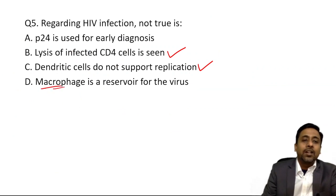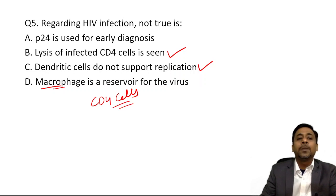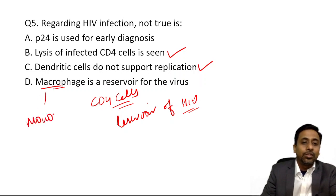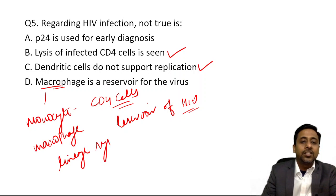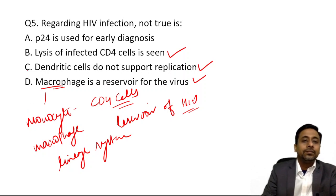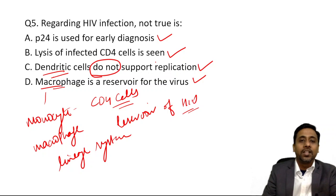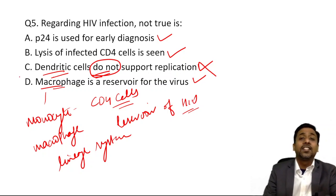CD4 cells are the main reservoir of HIV, but the monocyte-macrophage lineage can also act as a reservoir for the virus. Follicular dendritic cells, though they lack the CD4 antigen, do support HIV replication. So the statement 'dendritic cells do not support replication' is not correct — dendritic cells do support replication.